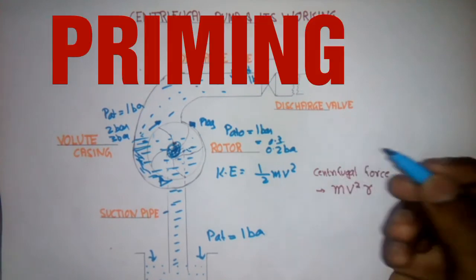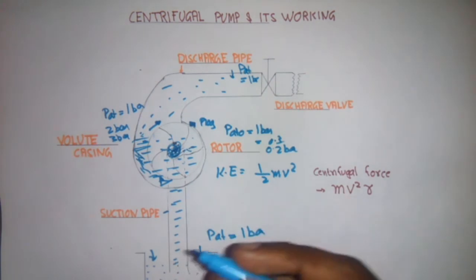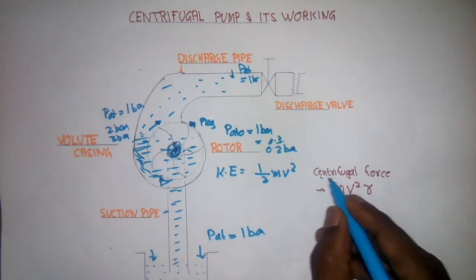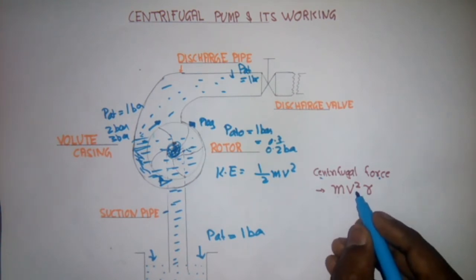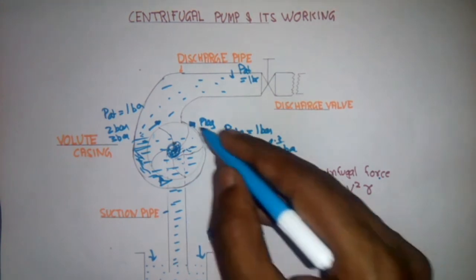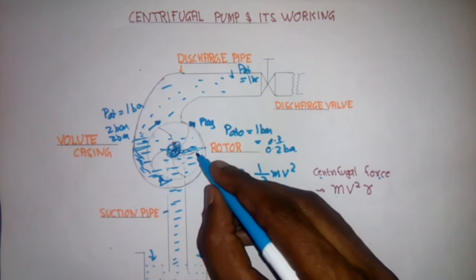Now I will explain what is priming and why the centrifugal pump requires priming. For that I will take this equation, centrifugal force equation that tells us that centrifugal force equals m v^2 / r, mass times speed of rotor squared divided by radius of rotor.